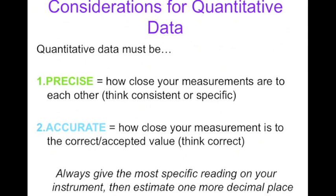Always when you're looking at a measurement instrument, we want to give the most specific reading possible. This will not only help us be precise but also hopefully be more accurate. We want to estimate one more decimal place. We're going to read what we see and then estimate one more decimal place to make it as specific as possible. We'll practice this with some measurement stations together in class.